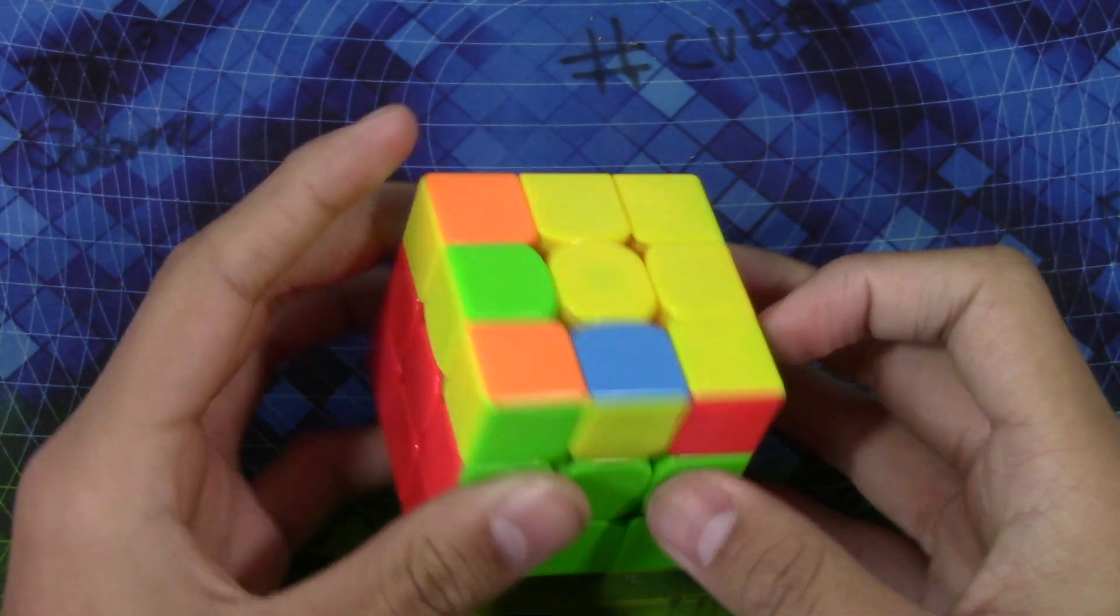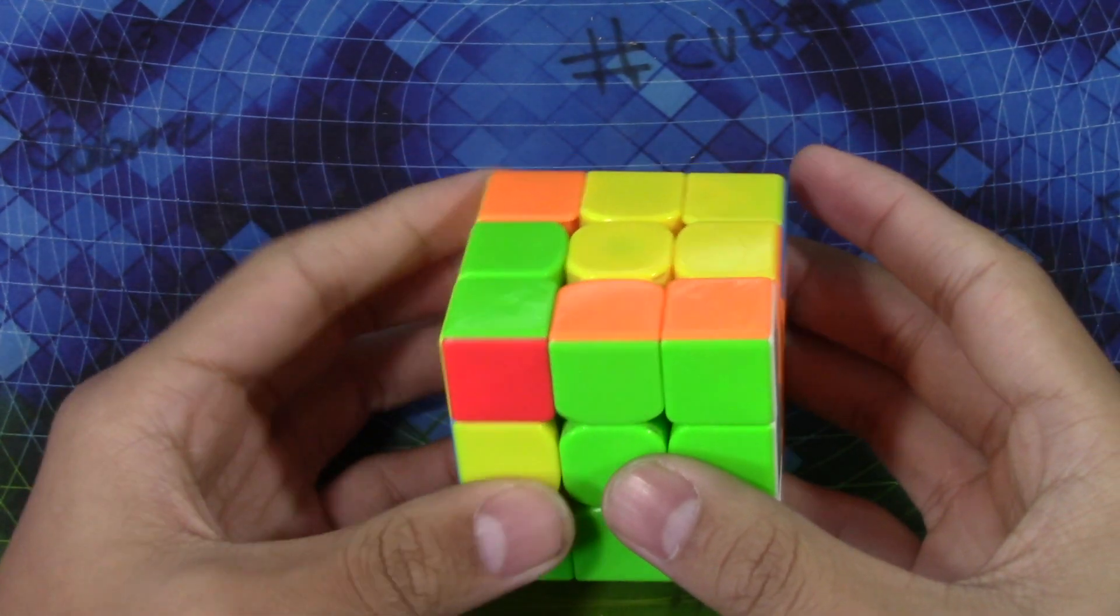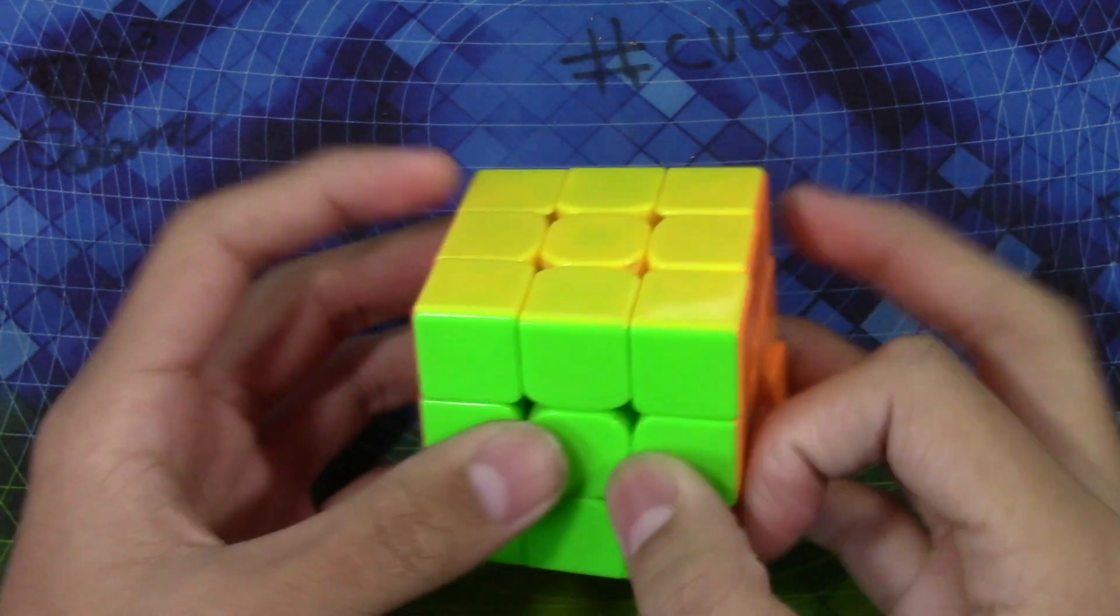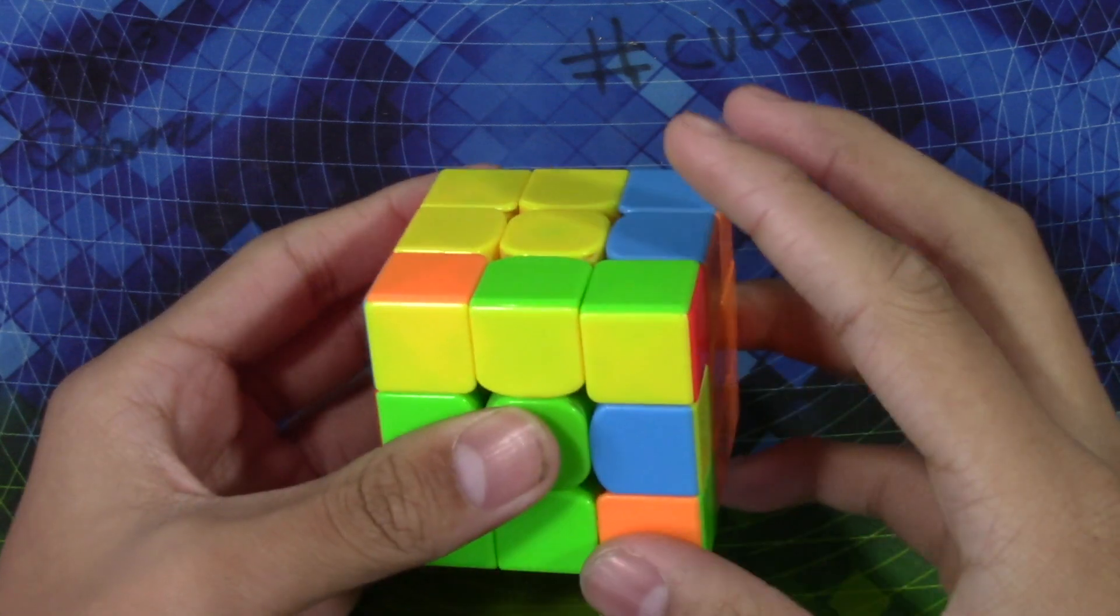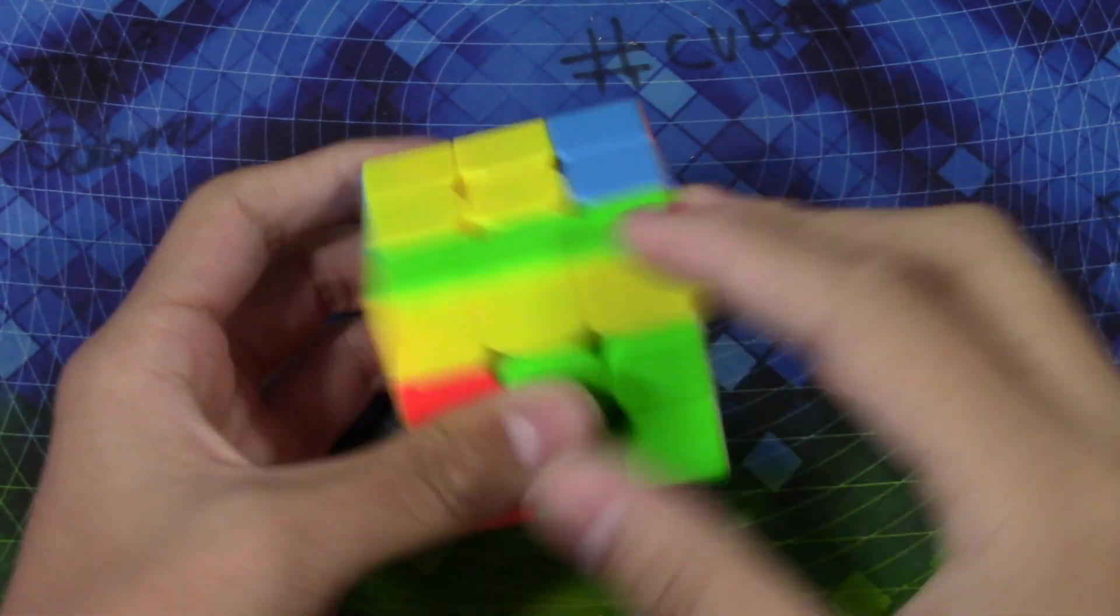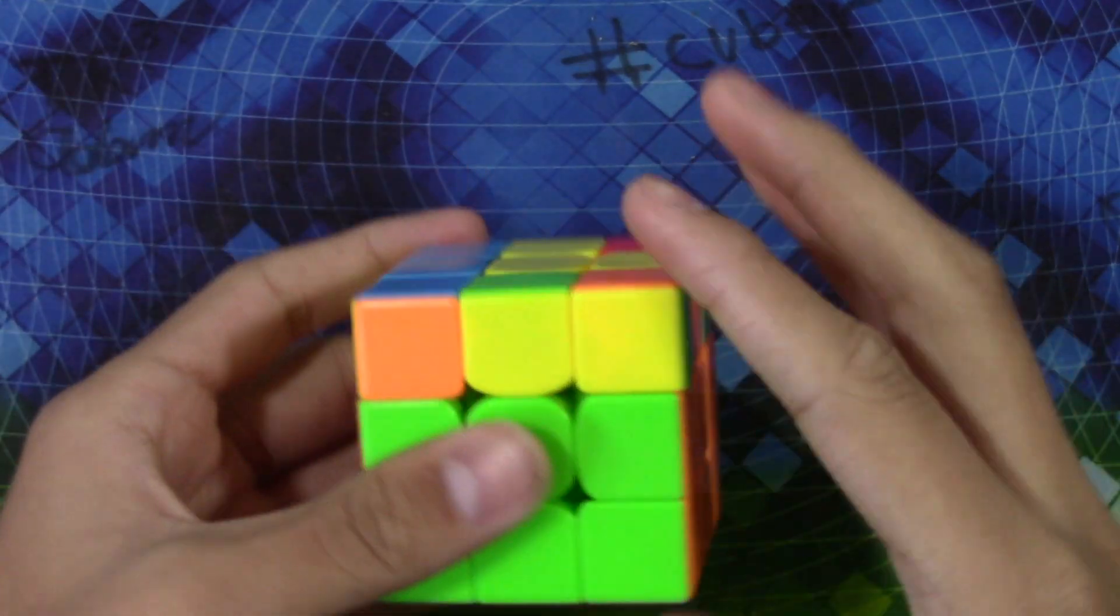Then you just have this all else, so you can either do it like F prime and then inverse lefty sexy F, or the way I like to do it is U prime and then R prime U prime F prime U F and then R, just like that. Here's what it looks like at full speed.